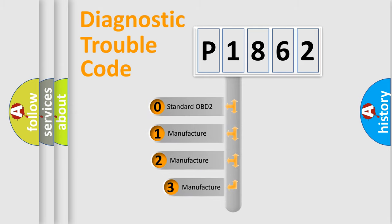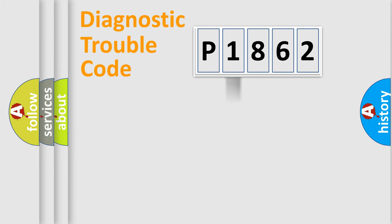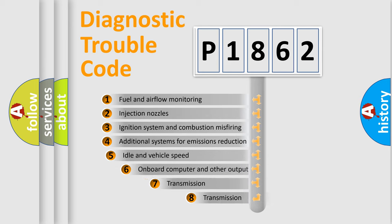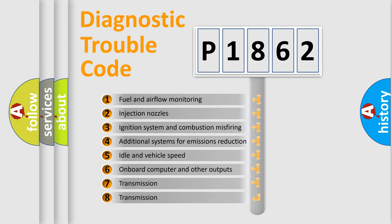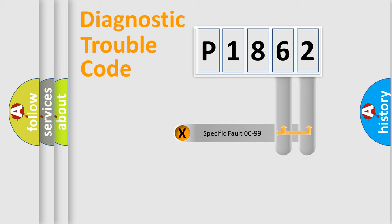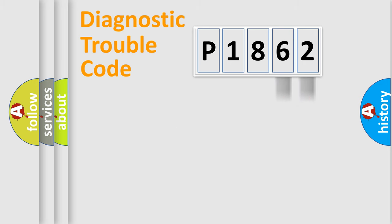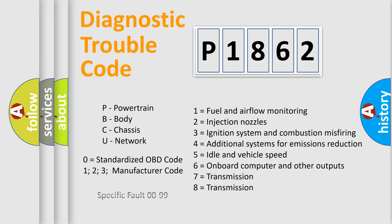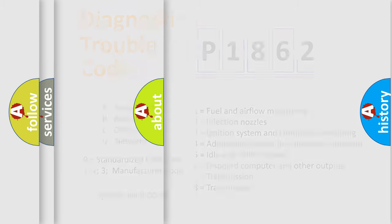If the second character is expressed as zero, it is a standardized error. In the case of numbers 1, 2, or 3, it is a more specific expression of a car-specific error. The third character specifies a subset of errors. This division is valid only for the standardized DTC code, and only the last two characters define the specific fault of the group. Such a division is valid only if the second character code is expressed by the number zero.